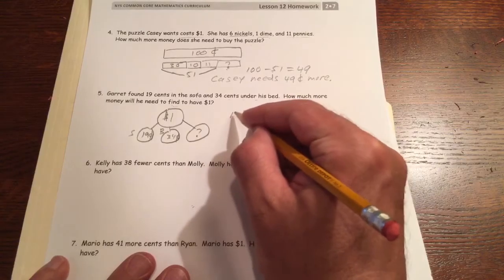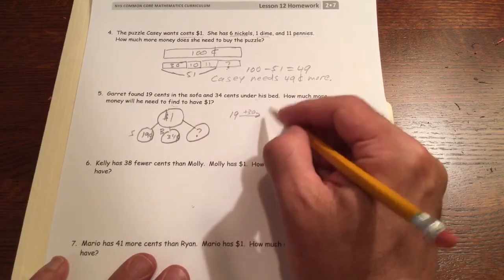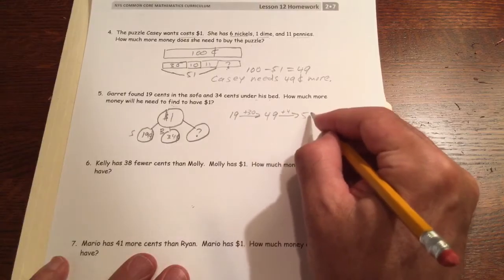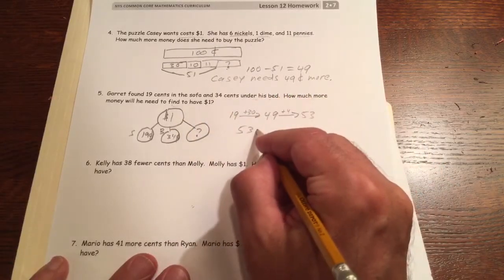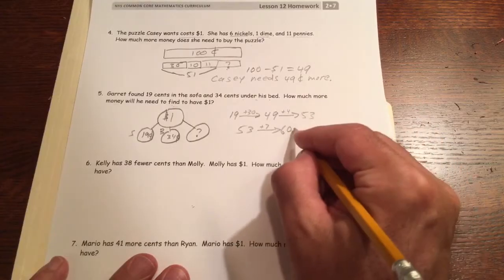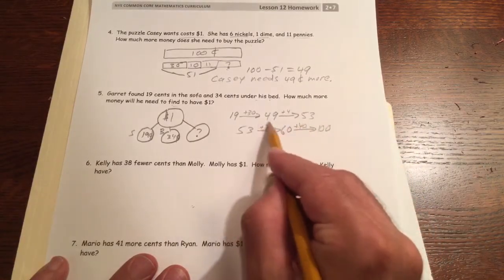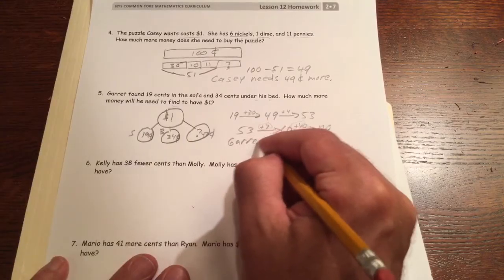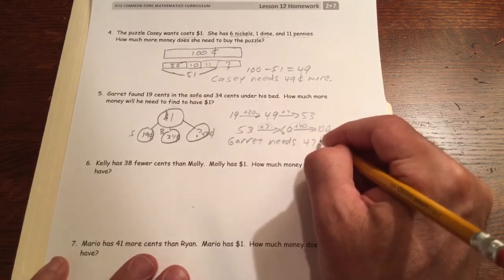We'll use the arrow way. Start with 19 and add the 34. 19 plus 30 is 49, then plus 4 is 53. Now we have to get from 53 cents to the dollar. Let's add 7 to get to the next 10, which is 60, and then 40 more cents gets us to 100. That means we need to add 47 more cents. Garrett needs 47 cents more.